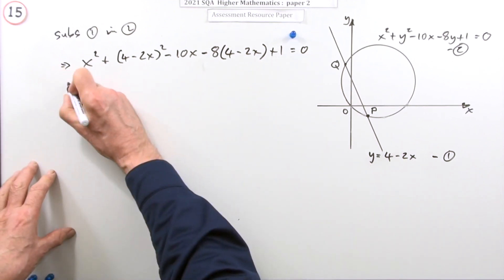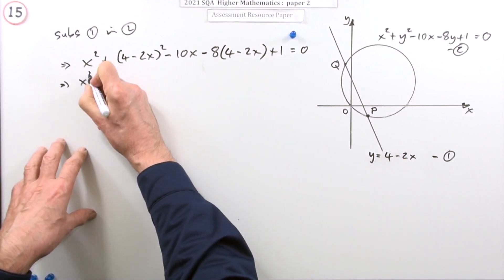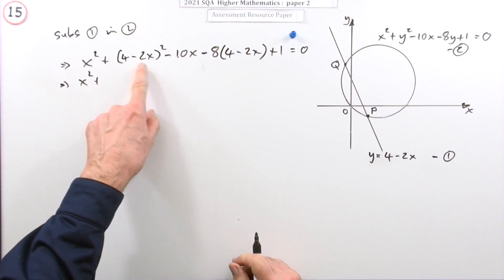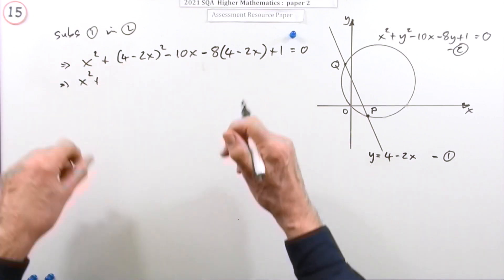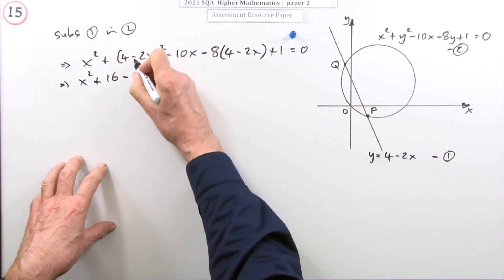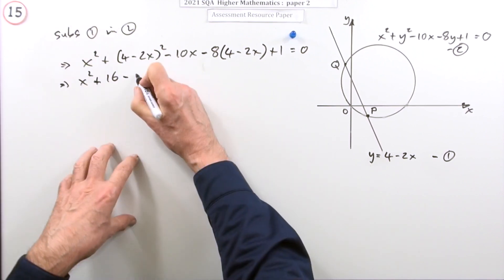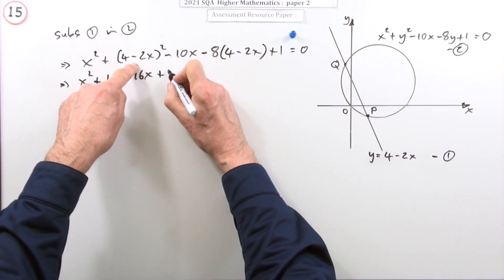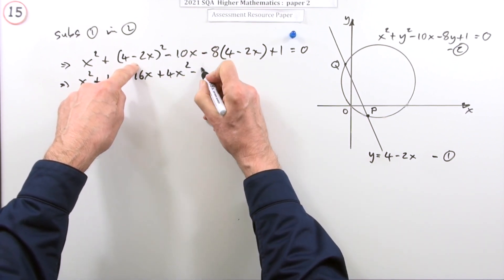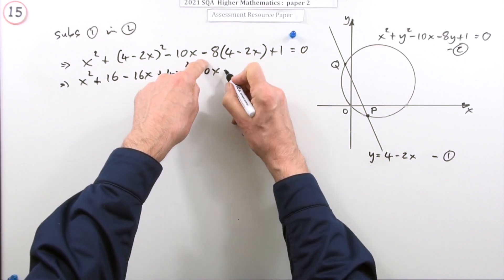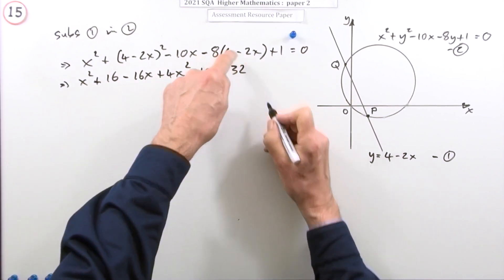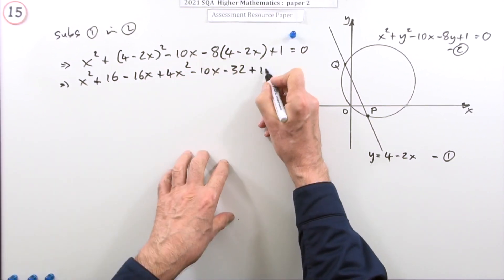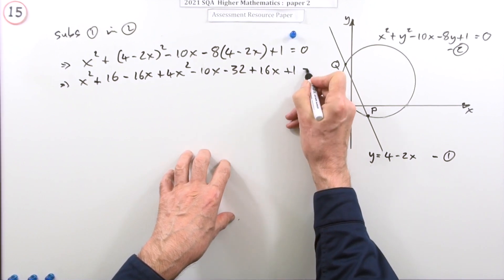Now you just have to multiply that lot out. So x squared plus, right, square a bracket: square the first, square the last, in the middle twice the product. Square the first, 16. Minus twice the product, 8 doubled is 16x. Square the last, and it's always positive, careful of that. 4x squared, nothing happens here. Minus 32, minus minus is plus, 8 twos are 16x, plus the 1 equals 0. No marks for that, no marks until you've tidied it all up.